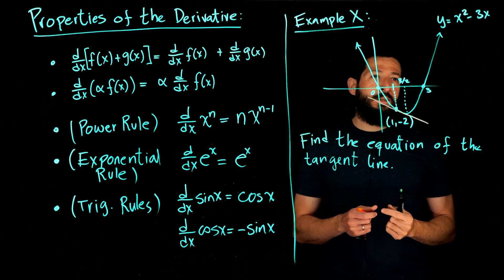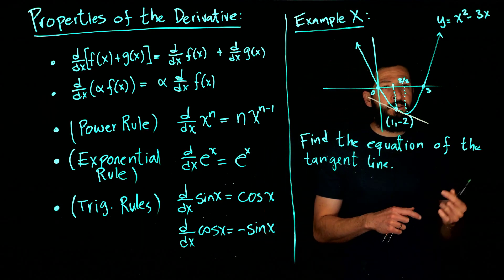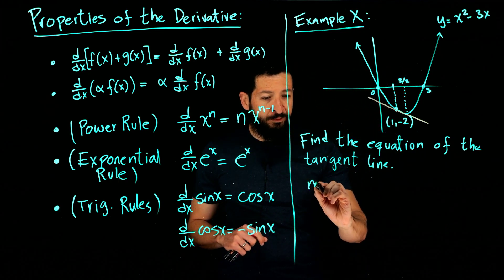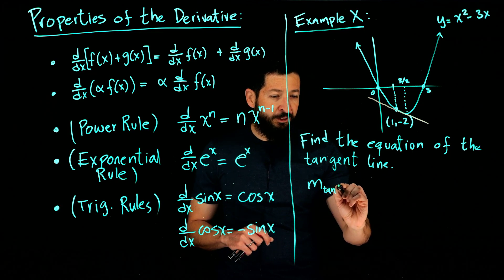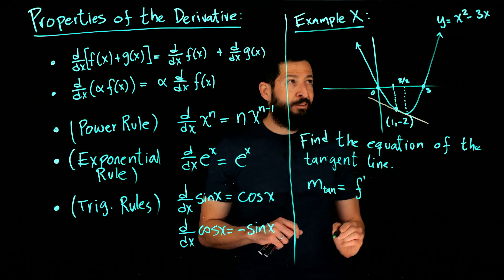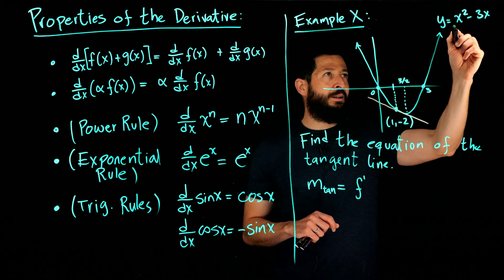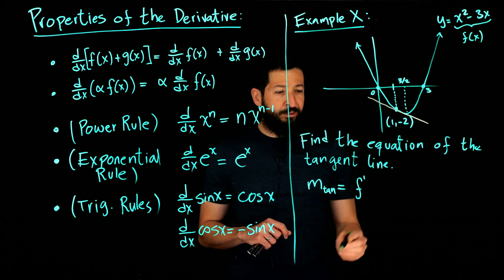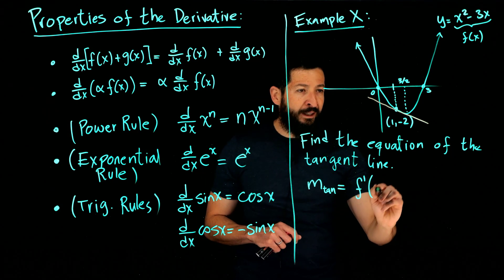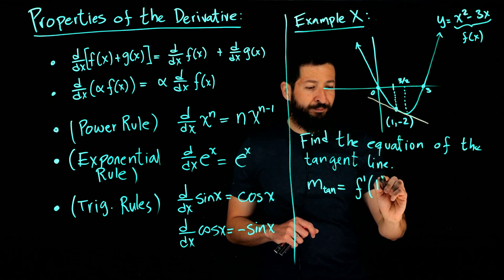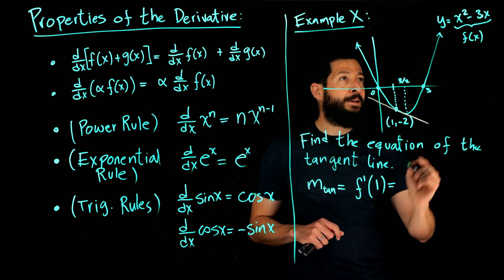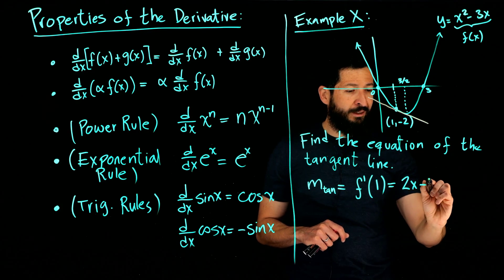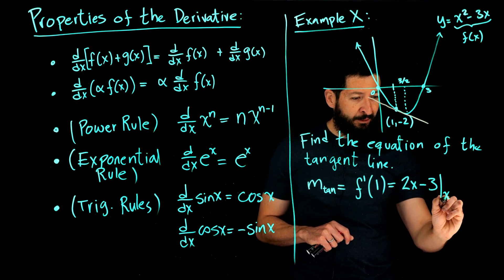So you have a point. When you want to write the equation of a line, if you have a point, you need a slope. And what would be the slope? Well, the slope of the tangent line is going to be the derivative of the function. In this case, f of x would be x squared minus 3x. You're going to take the derivative of f and evaluate it at the x coordinate, so in this case at one. So what is the derivative of x squared minus 3x? It's going to be 2x for the first term minus 3 for the second. I'm going to evaluate that at x equals one.